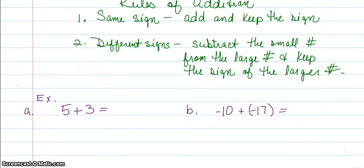In the first one, I have 5 plus 3. I have a positive 5 and a positive 3. The signs are the same, so I'm going to add and keep the sign. 5 plus 3 gives me 8.